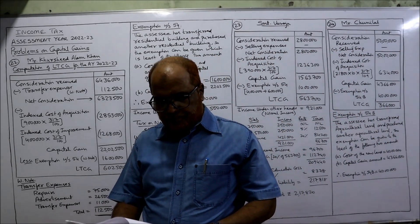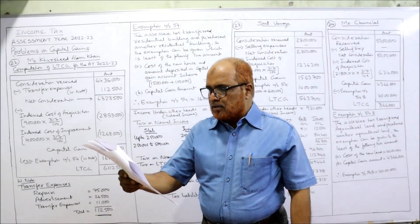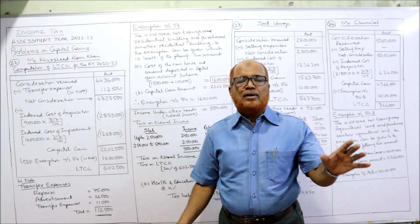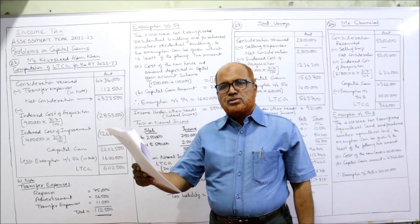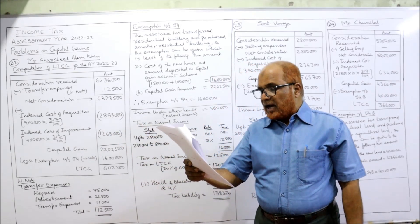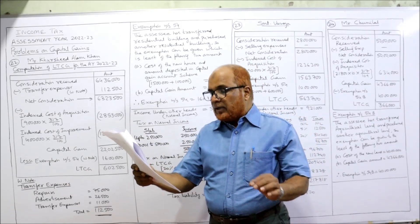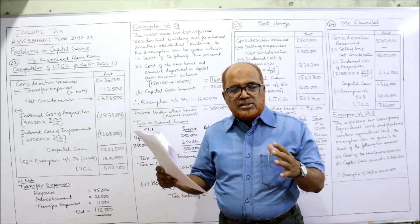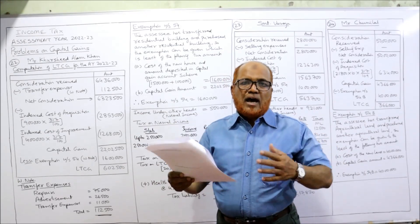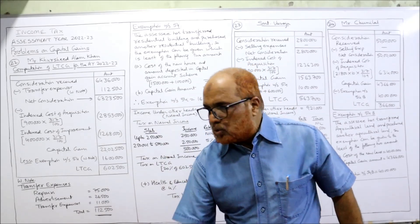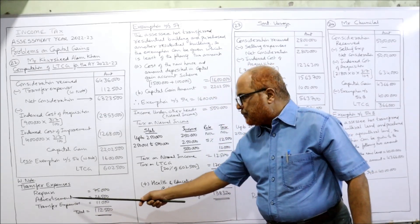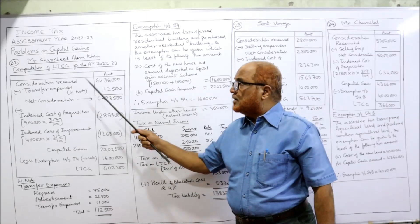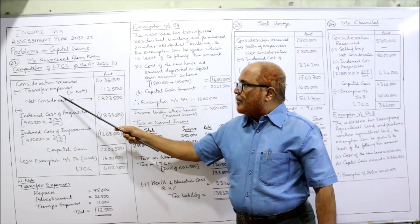Now see the 22nd problem. Mr. Khurshid Alam Khan sold his residential property for Rs. 64,36,000 — this is the consideration received. Before selling the house, Rs. 75,000 was spent for repairs and renovation; advertisement in local newspapers for sale of the house Rs. 26,000; and other transfer expenses Rs. 11,000. So all these are the selling expenses. Total transfer expenses: repair Rs. 75,000 + advertisement Rs. 26,500 + transfer expenses Rs. 11,000 = Rs. 1,12,500.